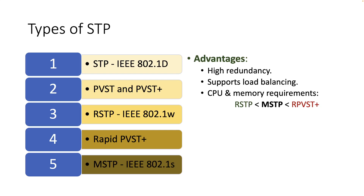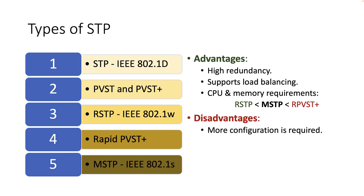Considering that each Rapid STP instance is independent of other instances, the benefits of this approach are that it provides multiple forwarding paths for data traffic and enables load balancing, while the CPU and memory requirements are less than for Rapid PVST Plus but more than for RSTP. The main disadvantage is that it might require more configuration and it might not be that easy to implement.